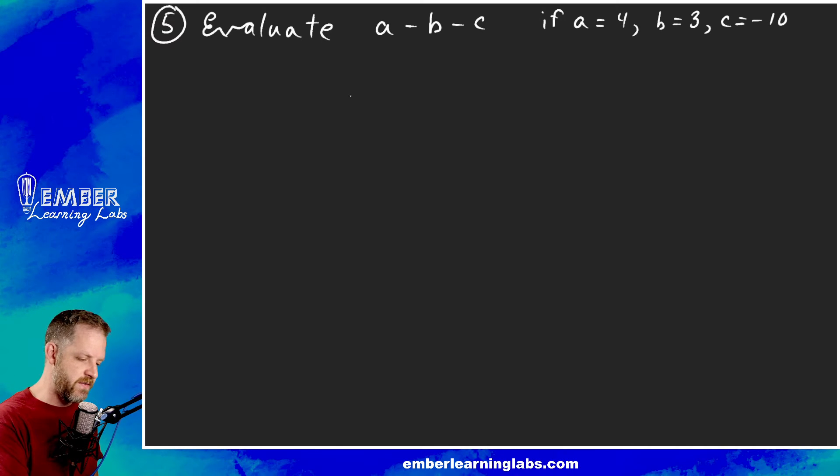We're going to do parentheses minus parentheses minus parentheses, and then we're going to substitute what goes where. This one was a, so we're going to put a 4 right there. This one was b, so we're going to put a 3 right there. This one was c, so we're going to put a negative 10. Look at that, what do we say? We ka-chink ka-chink!